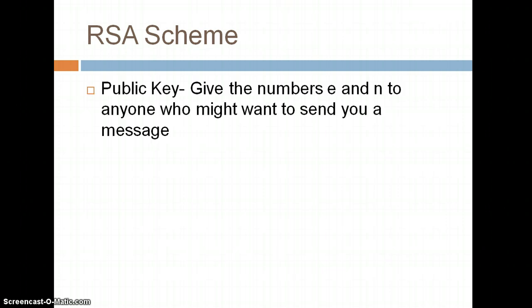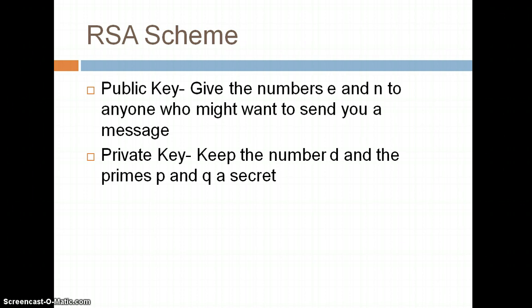The way the scheme works is you have a public key, which would be the numbers E and N that you give to anyone, you can publish online, whoever wants to send you a message. Then you have a private key, which would be the number D and the primes P and Q, which you would keep a secret.